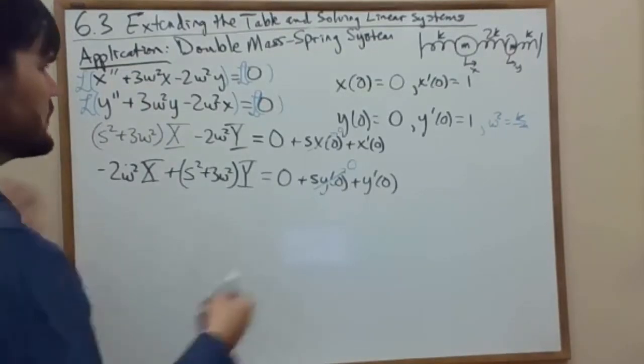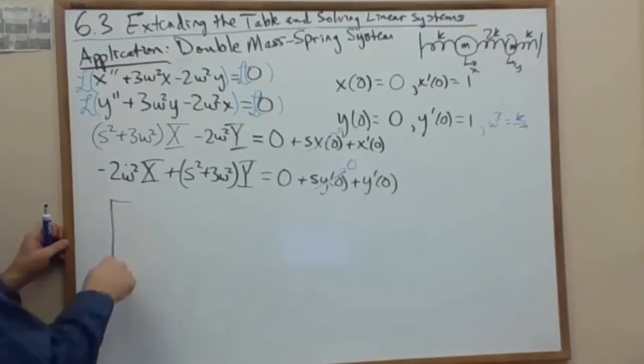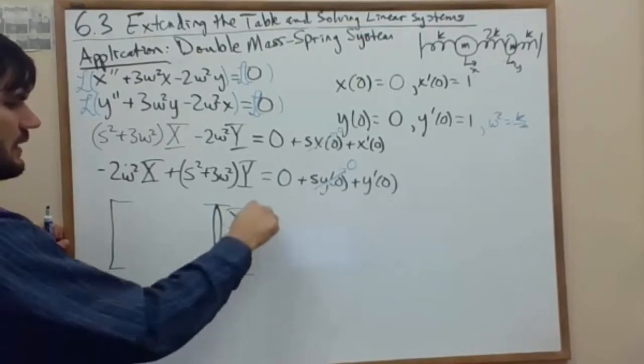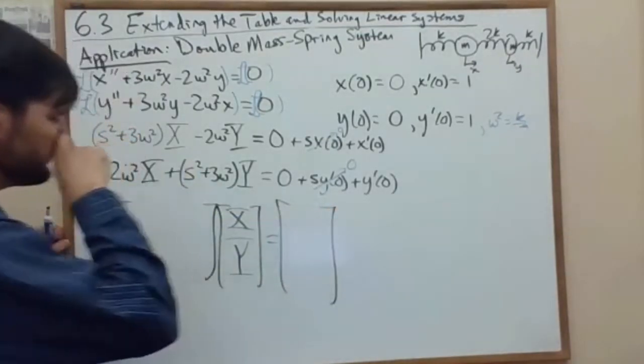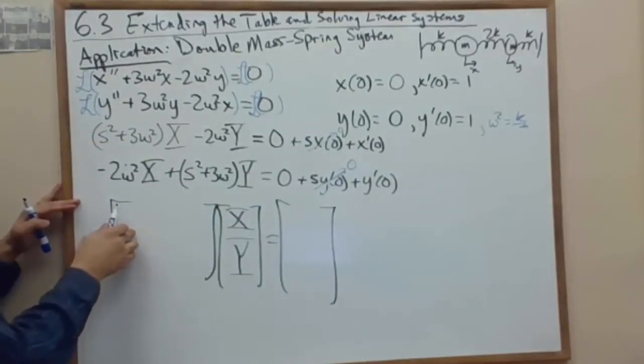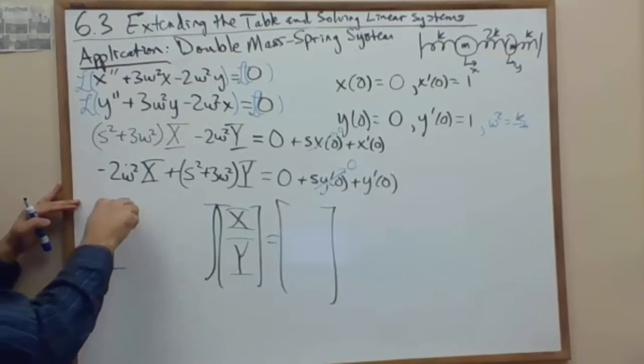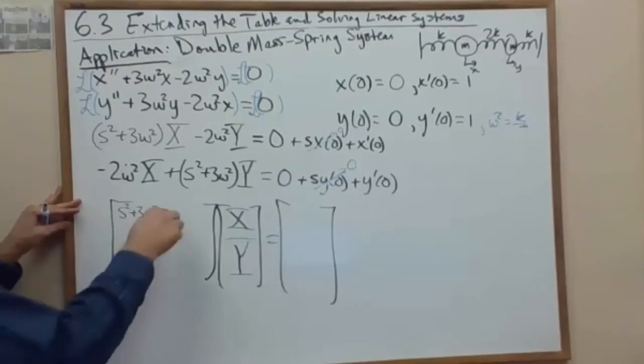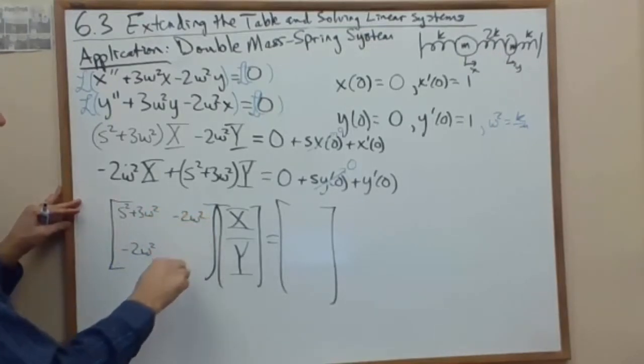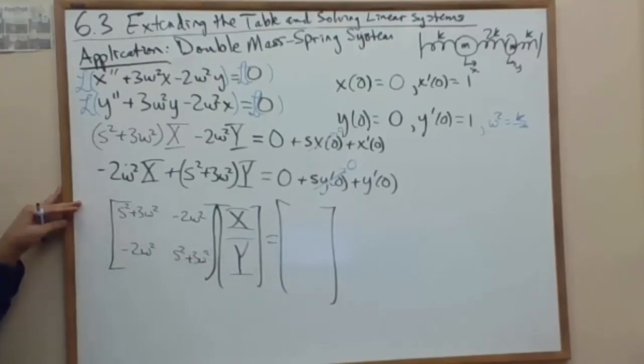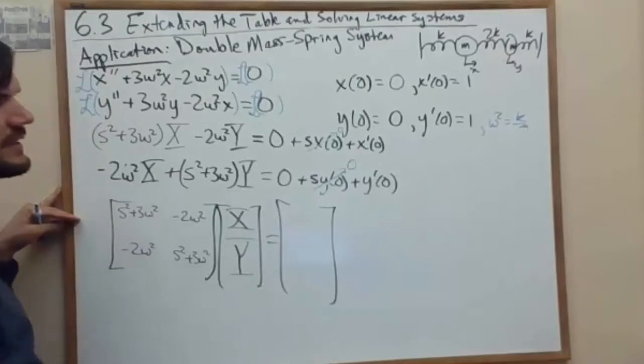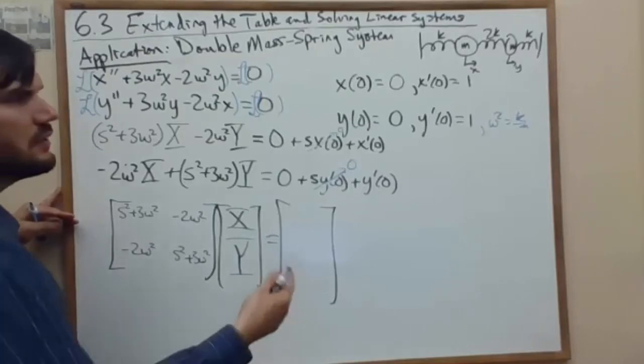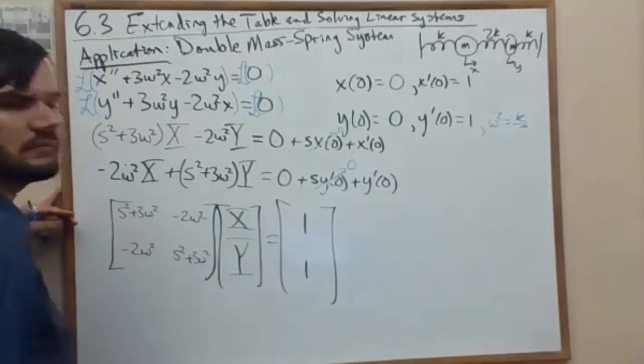Now let's form the matrix version of this equation. We first have the coefficient matrix times the variables, capital X, capital Y. The x coefficients are s squared plus 3 omega squared and a negative 2 omega squared. The y coefficients are negative 2 omega squared and an s squared plus 3 omega squared. The resultant vector on the right-hand side is based upon the two initial velocities. So they're actually both 1. That's kind of cool.